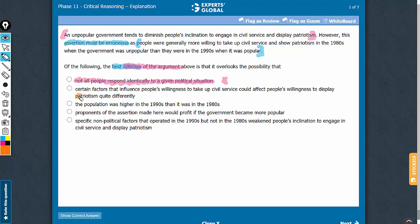Answer choice B is a trap. This talks about people showing their patriotism in different ways. However, please see, this assertion here is about displaying patriotism through engaging in civil service. Therefore, people displaying their patriotism differently, while it is something correct, it is not relevant to the argument here.